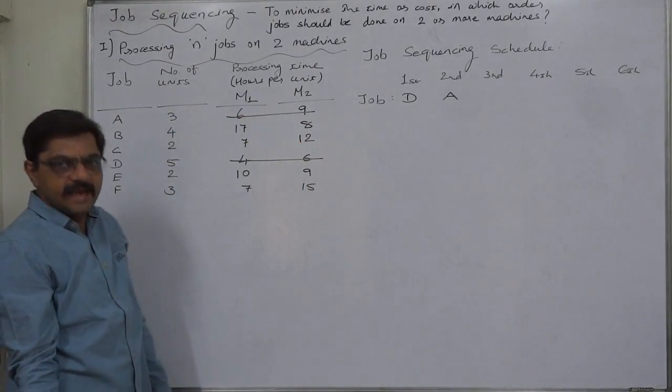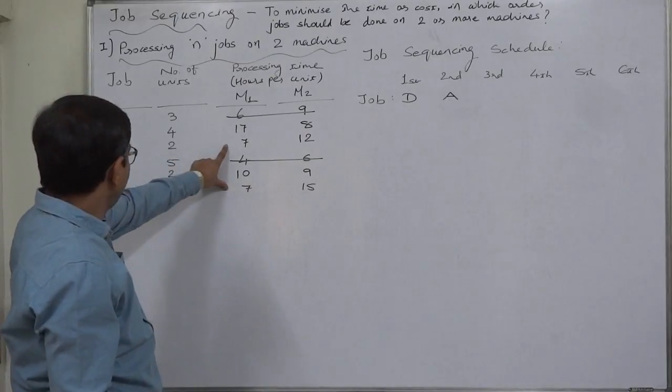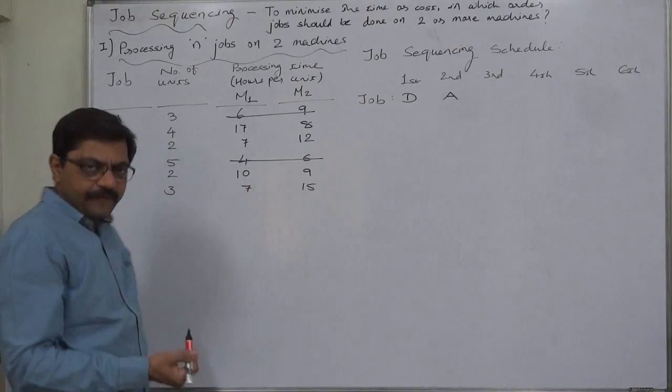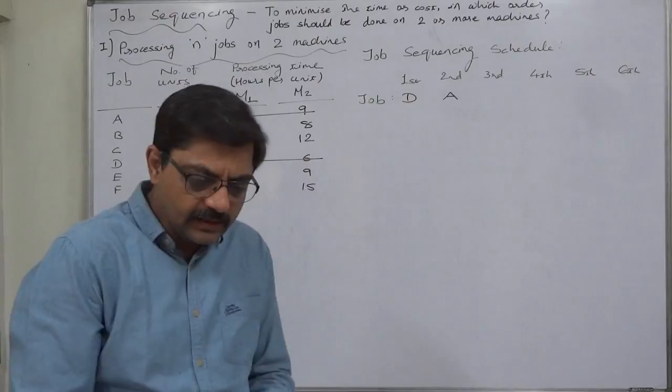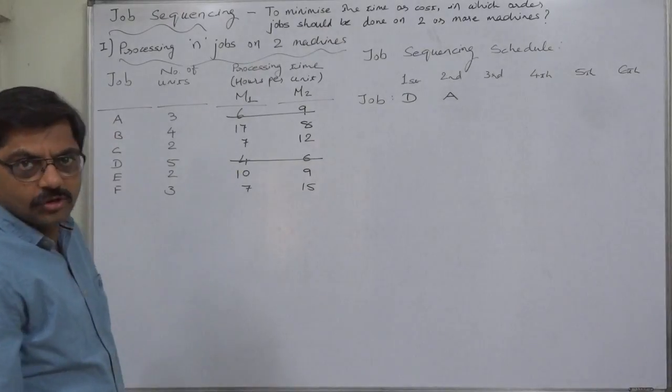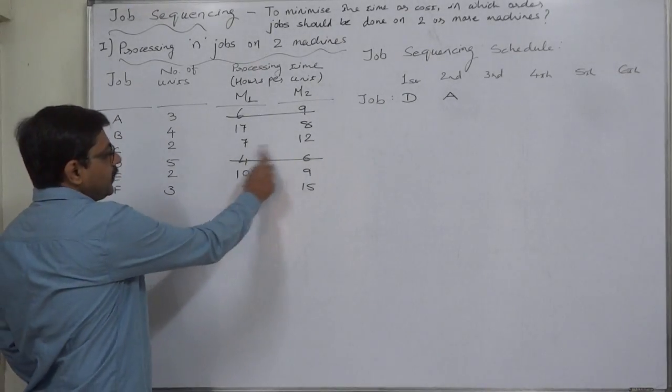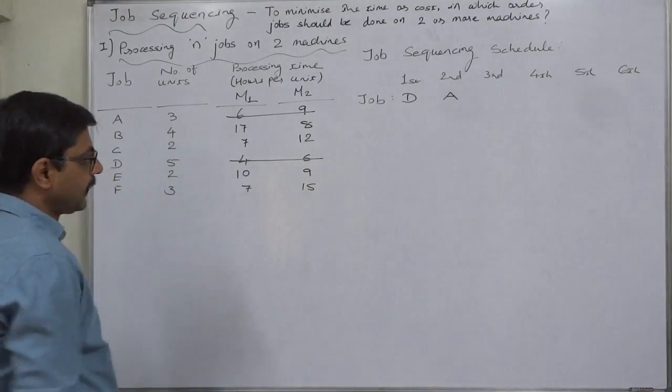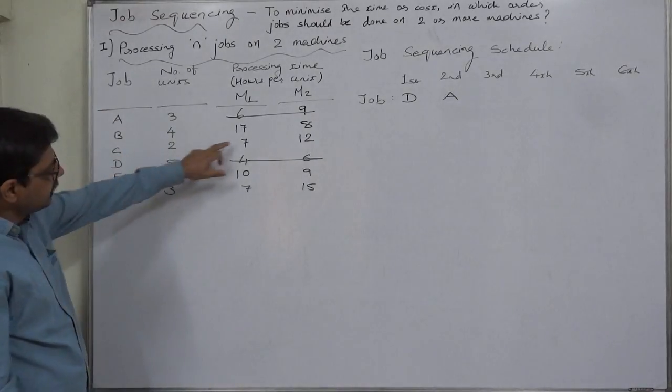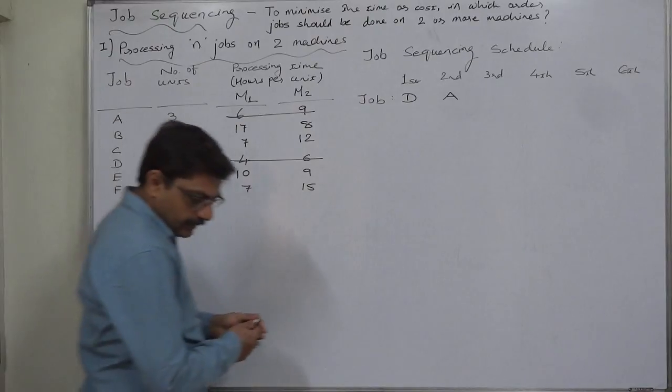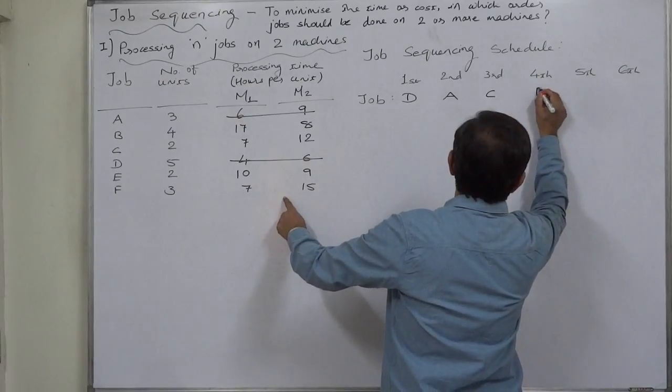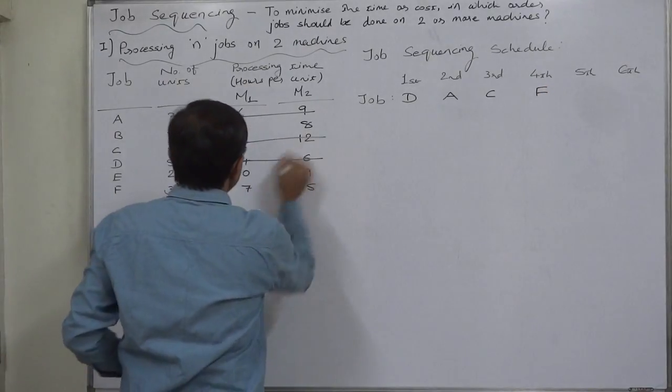Now the remaining jobs are B, C, D, F. The minimum time is on C and F—that is seven hours. There is a tie between C and F on machine one. When the tie is on machine one, the job with the lowest total time is placed on the left-hand side first. 7+12=19, 7+15=22, so job C has the minimum total time. It will be placed on the left-hand side, and on its right-hand side, the other job involved in the tie will be placed.